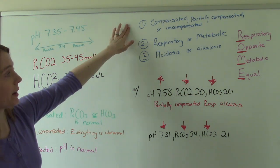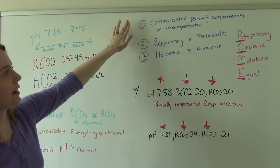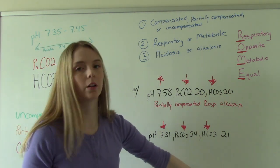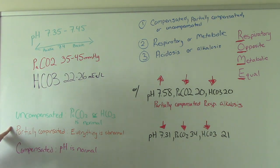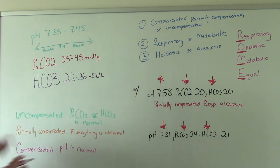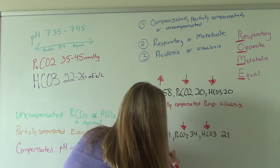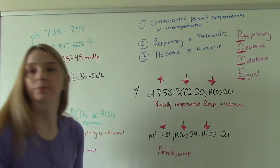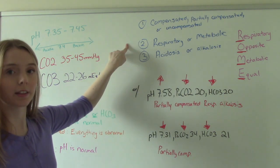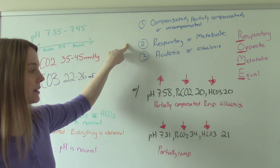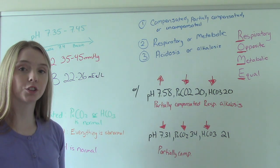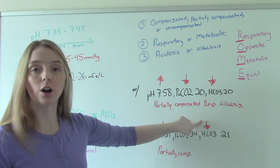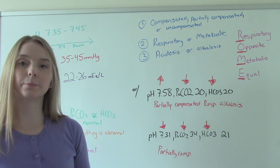Step one: is it compensated, partially compensated, or uncompensated? Everything is out of whack here — nothing is normal — so it's partially compensated. Step two: is this a respiratory thing or a metabolic thing? Let's compare our pH to our bicarb. Our pH is decreased — it's low — and our bicarb is also low. When they're equal, it's metabolic.